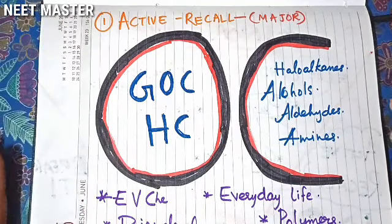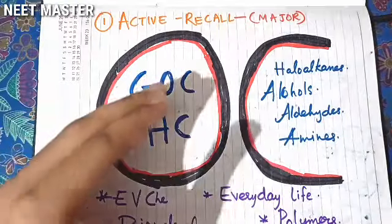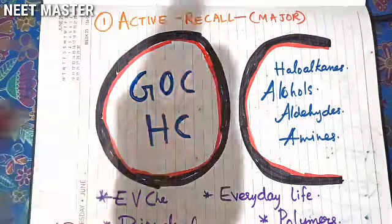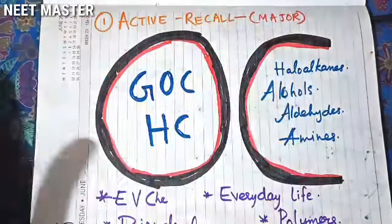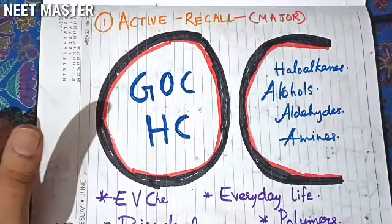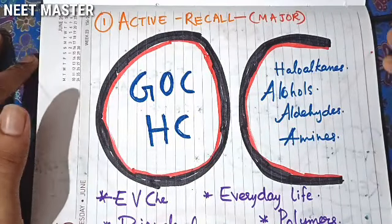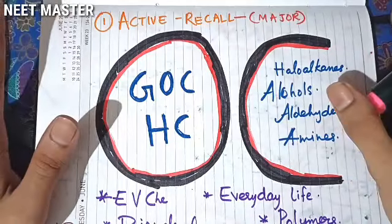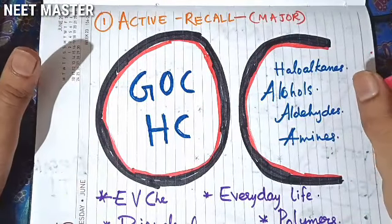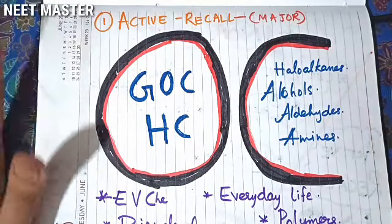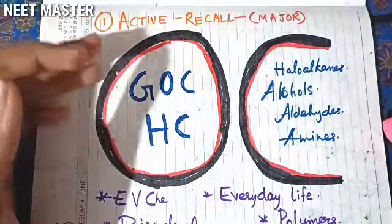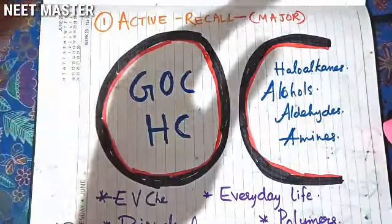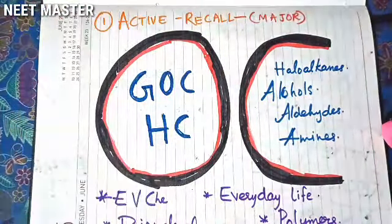What do we say about organic chemistry? Organic chemistry has two parts. These chapters include Haloalkanes and Haloarines, Alcohol, Phenol, Aldehyde, Ketones, Carboxylic Acid, and Amines.